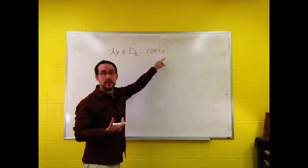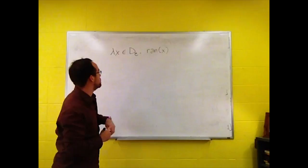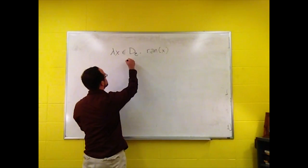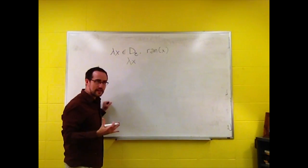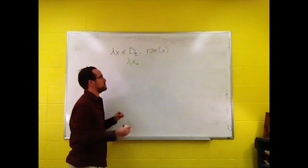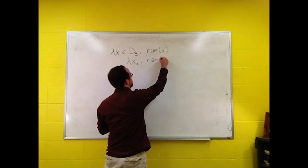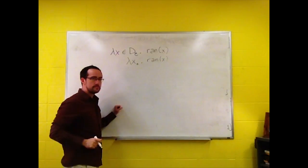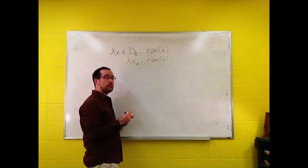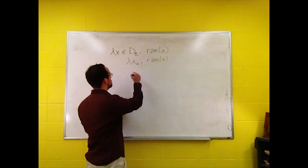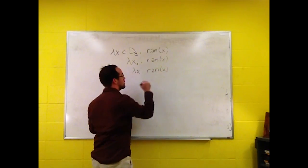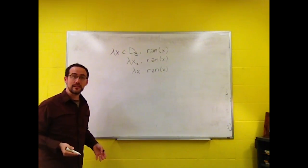Now of course this is itself an abbreviation. In a strict sense, so is this. But in the literature, what people will do instead is just write lambda x with a subscript e, ran of x, and that will mean the same thing. Going even further, people will often remove the subscript, and we end up with lambda x ran of x.